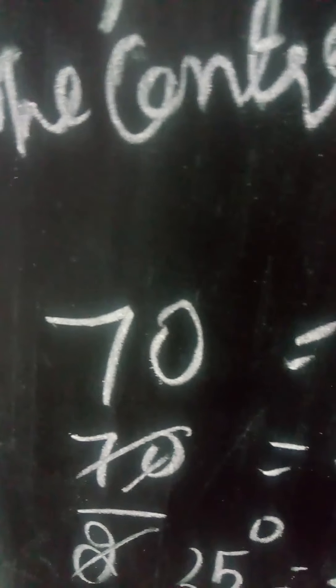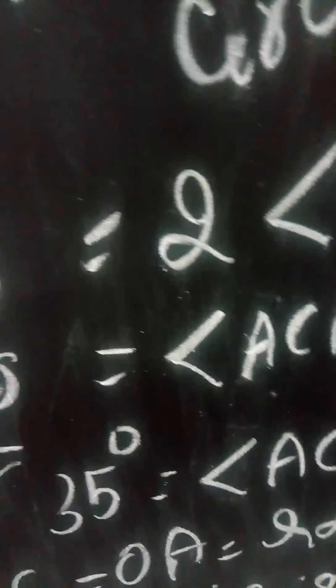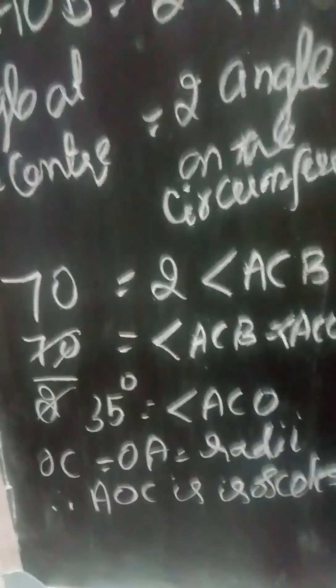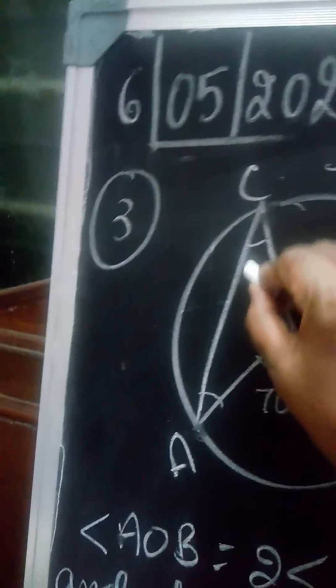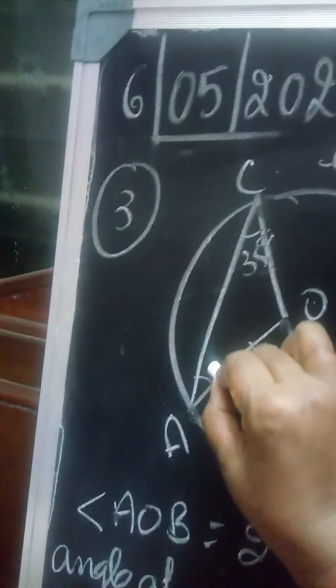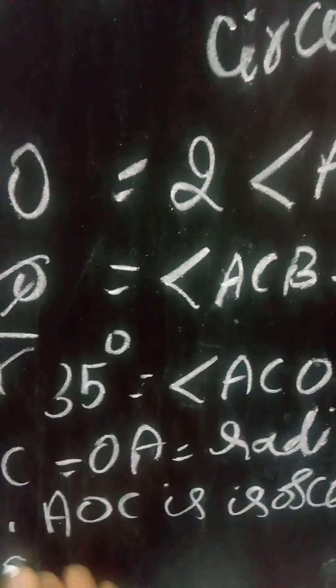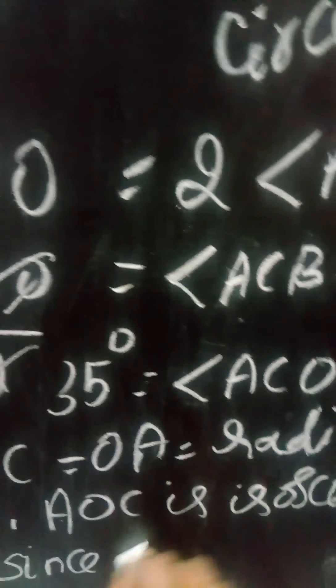The triangle is isosceles. Now the base angles will be the same. We have found this is 35, so what will this be? This also will be 35. Base angles will be the same.